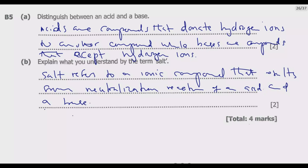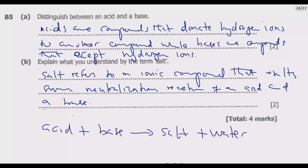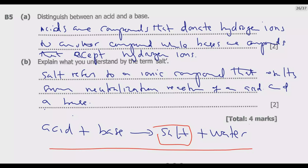This salt consists of a positive ion known as a cation and a negative ion from an acid. Salt arises from the reaction: acid plus base gives salt plus water as the products. So we define it as an ionic compound that results from the neutralization reaction of an acid and a base. Once you address this you are good to go and you get these four marks.